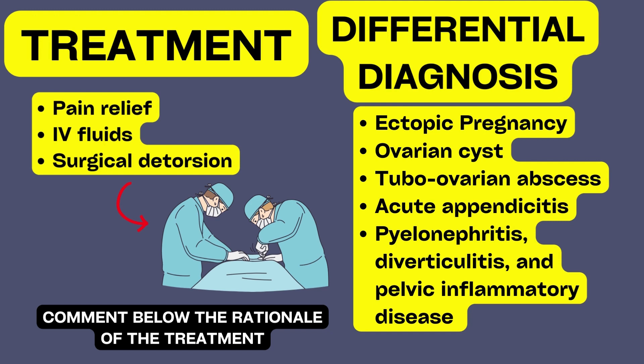Another condition is an ovarian cyst. On ultrasonography, both may also show free fluid in the pelvis. However, cyst rupture frequently happens during sexual activity and is typically accompanied by quick, intense pain. Lower pelvic pain from a tubo-ovarian abscess can be present, but it normally develops more gradually and is accompanied by a fever.